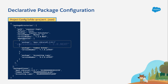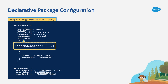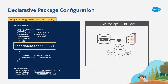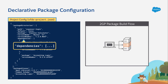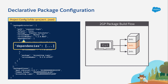That brings us to package dependencies. With 2GP, if something isn't in source, then it's not in the package, and this project configuration file is part of how that works. If you picture the 2GP build process from the previous video, where we talked about 100% source-driven package development as a feature of 2GP, you might remember there was a step where we went from the CLI to the end product of individual package versions.